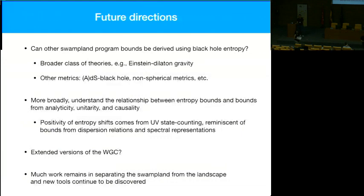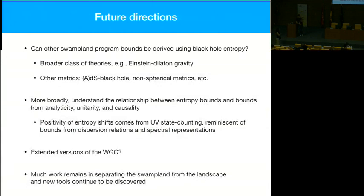Q: The crucial point of your analysis was the assumption that the saddle point is a local minimum — that's what lets you derive an inequality. Normally, computing the Euclidean action of an unstable state gives an imaginary part from a physical negative mode. A: Black holes with charge-to-mass ratio bigger than √3/2 are thermodynamically stable at leading order. The way they decay is through a gravitational instanton — a highly suppressed interaction. There is an imaginary part of the mass, but it's so highly suppressed that it doesn't matter for the analysis.